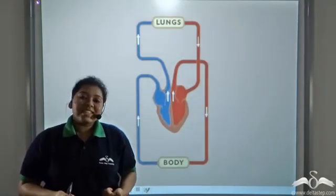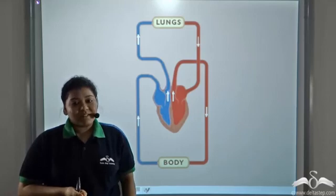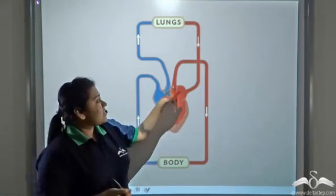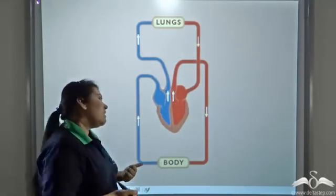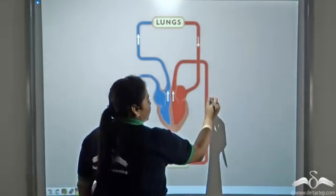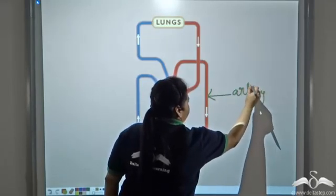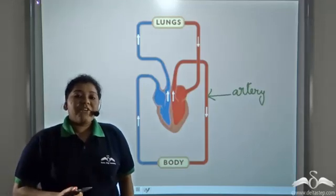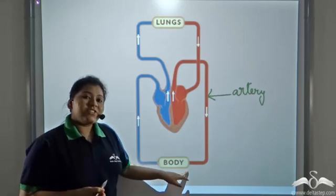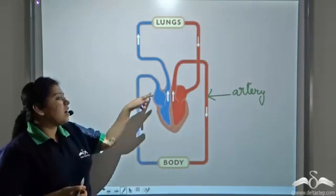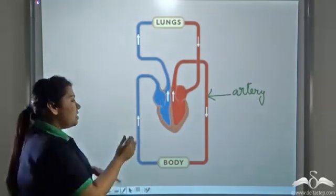Now arteries carry oxygenated blood and veins carry deoxygenated blood. So the vessel that carries oxygenated blood from the heart is known as an artery. The carbon dioxide rich blood from the body cells is transported via vessels back to the heart, and since veins carry deoxygenated blood, this vessel is a vein.